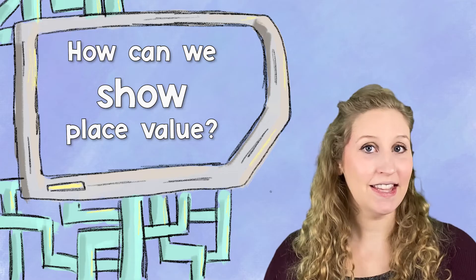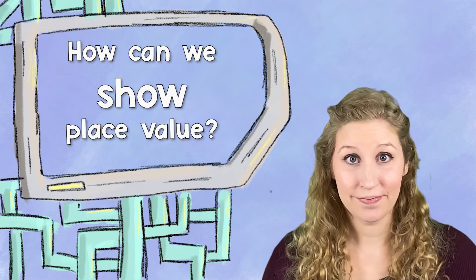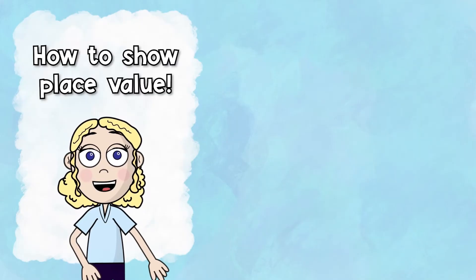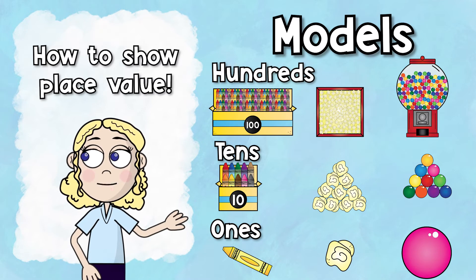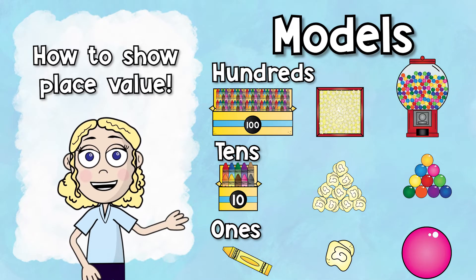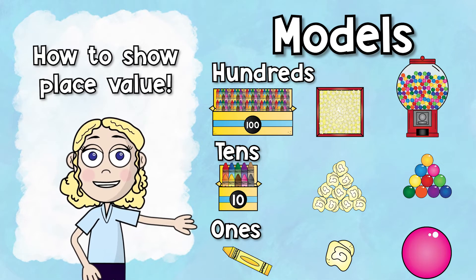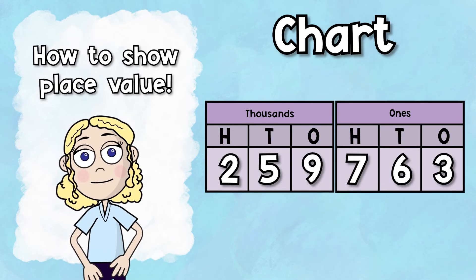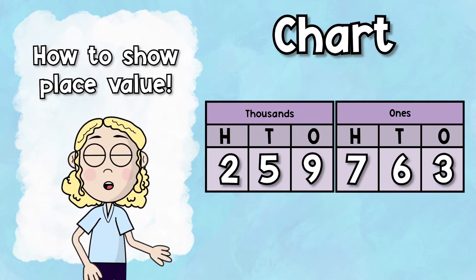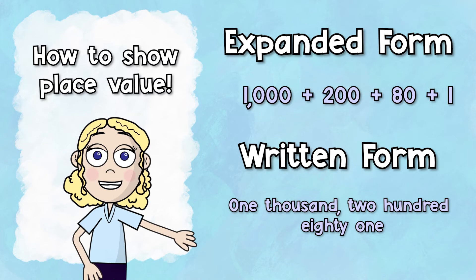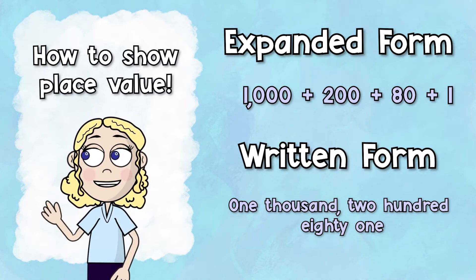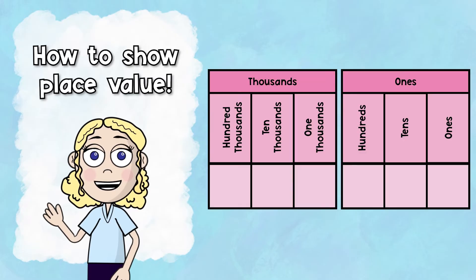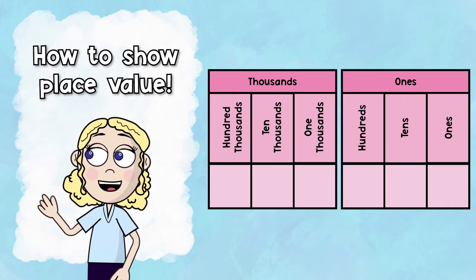What are some different ways that we can show place value? You can show place value in a variety of different ways. You might have seen it look like this, where it's in model form, and there's a bunch of different types of models that you can show place value. You might have also seen it in a place value chart or even seen it in a couple different forms like expanded form or written form. Let's take a look at a few of these bigger numbers and see if we can fill out a place value chart and see what the different place values represent.